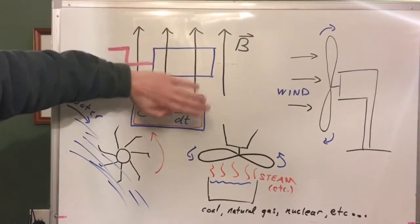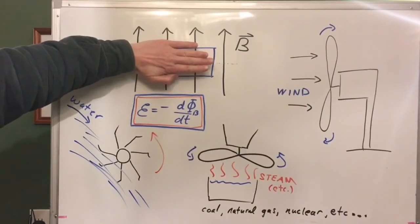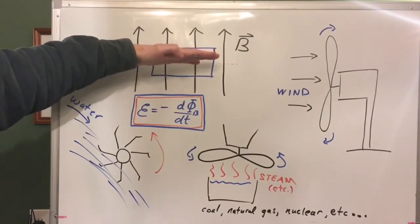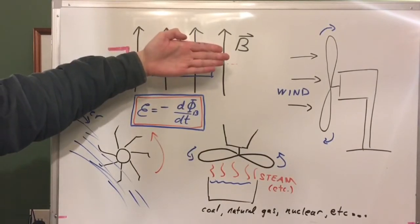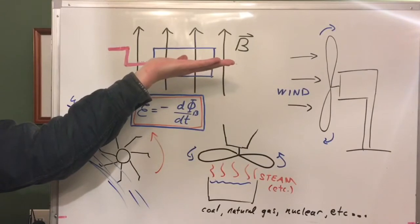One way to really simply do that is to have a loop of wire in a magnetic field. In this orientation there's no flux passing through it, but then if you just rotate the loop, you get the maximum flux. Rotate it some more—no flux. Rotate it some more—maximum flux going the other way.